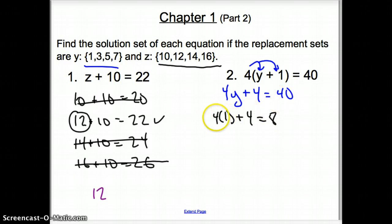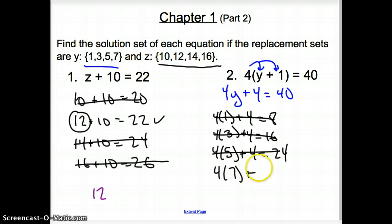Is that 40? No, it is not. Then I'm going to plug in 3. 4 times 3 plus 4. 4 times 3 is 12 plus 4 is 16. That is not 40. So 3 doesn't work. I try again. 4 times 5 plus 4. 4 times 5 is 20 plus 4 is 24. Again, that does not work. Let's see if we can try that last 7. 4 times 7 plus 4. 4 times 7 is 28 plus 4 is 32. That is not 40. So we have no set that works.